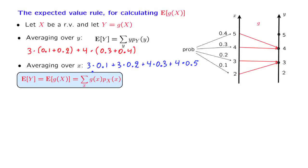So for instance, a typical term here would be when x is equal to 2, g of x would be equal to 3, and the corresponding probability, that's the probability of a 2, would be a point 1.